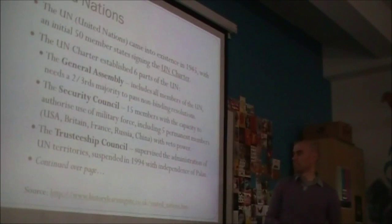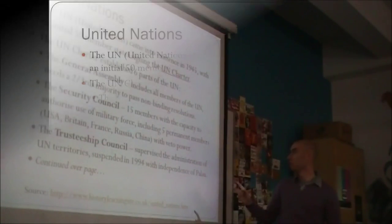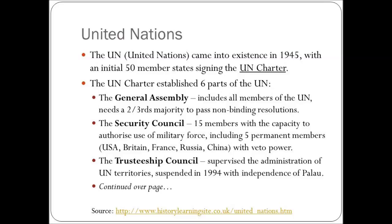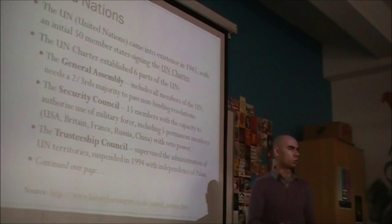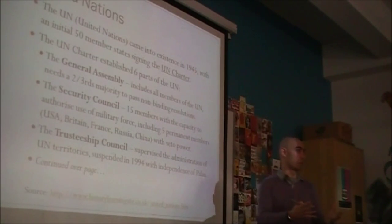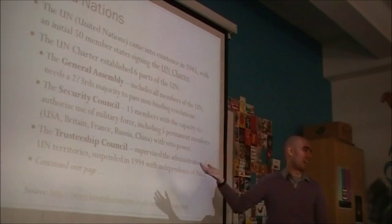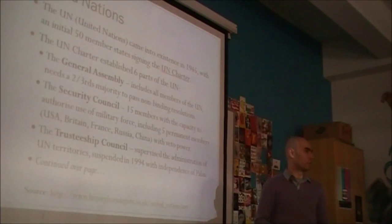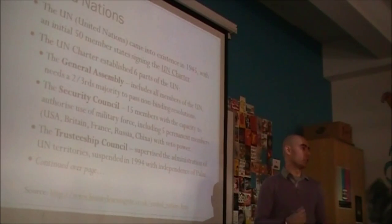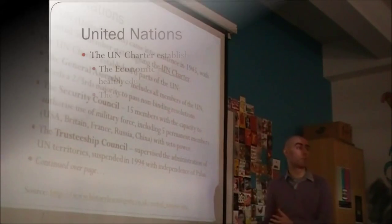The third body is the Trusteeship Council. This one no longer exists — it supervised the administration of UN territories, but was suspended in 1994 with the independence of Palau. It managed things like the Israeli-Palestinian territories. Former colonies would quite often become a UN trusteeship. The most well-known example is probably the Palestinian territory, which was divided into Israel and Palestine, and that went to the UN for a vote.